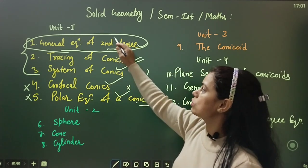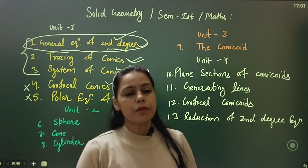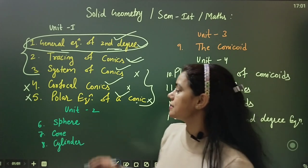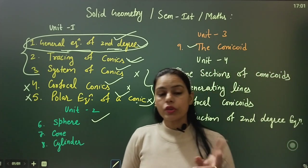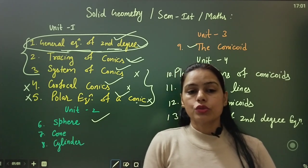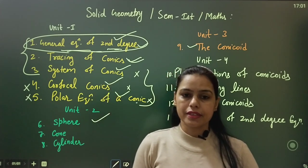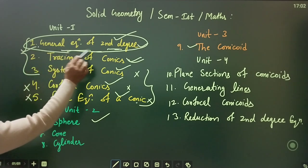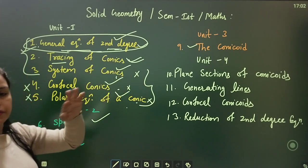If you have a personal question, then you should do the general equation of second degree first — the first chapter. In the first chapter the question is complete. The second thing is that it is basic — it will work in your sphere and in the conicoid. It will work in both units. If you have studied the general equation of second degree properly, it will work in the second and third unit. The short answer quota will be 100%. So there are many benefits.